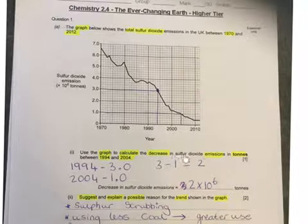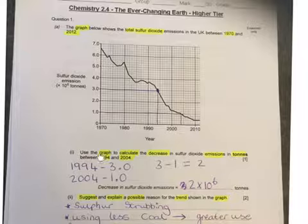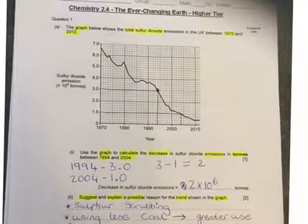I've used the graph to calculate the decrease in sulfur dioxide emissions in tonnes between 1994 and 2004. I drew up the lines - 1994, each of those little squares equals 1, it's 3 times 10^6 tonnes. Then at 2004, each little square equals 1, it is 1 tonne. Took them away from each other, so that would be 2 times 10^6 tonnes. A nice easy question to get you started, just reading data off a graph.